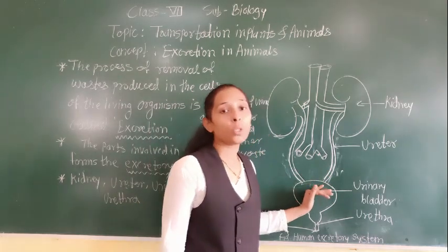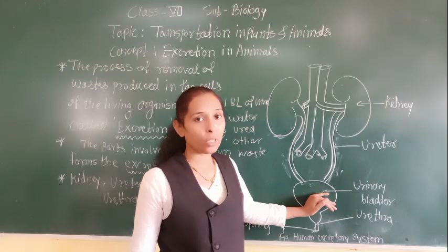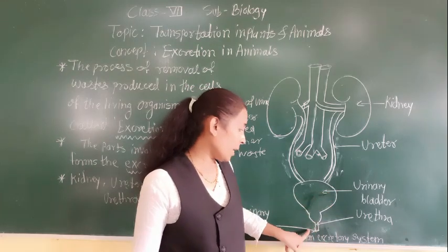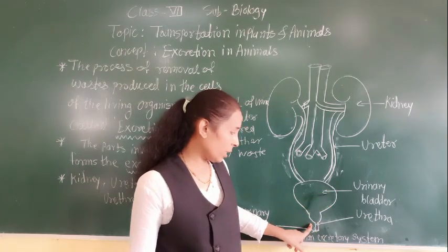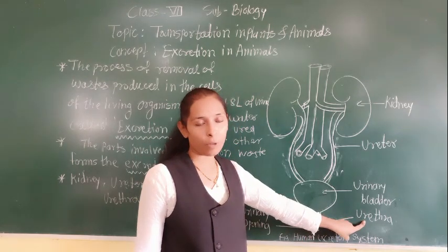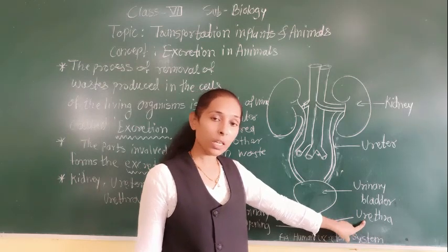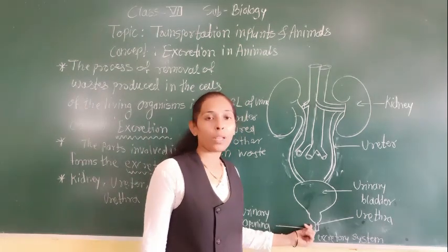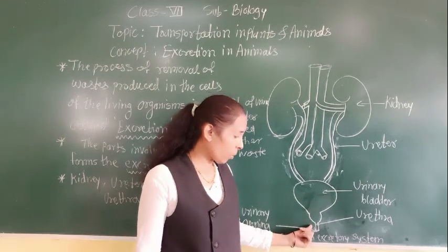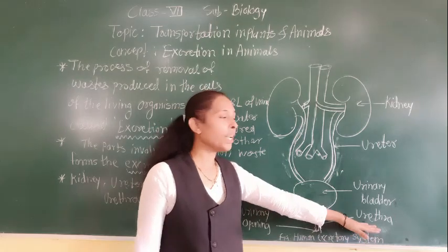In the urinary bladder, urine gets collected, and we throw out that urine at regular intervals through the opening present at the end of the urinary bladder, which is called the urethra. With the help of the urethra, we throw the urine outside from our body.